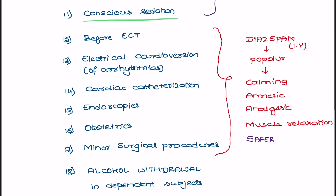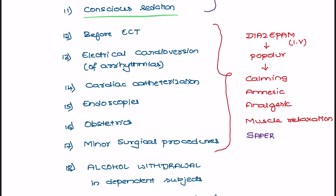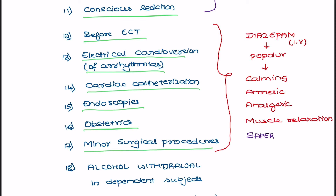They can be used before electroconvulsive therapy and in the treatment of electrical cardioversion arrhythmias, and also in cardiac catheterization, endoscopic procedures, and minor surgical procedures. Diazepam in IV form is one of the popular drugs because of its calming, amnesic, analgesic, and skeletal muscle relaxing properties, and because it is relatively safer compared to other drugs.